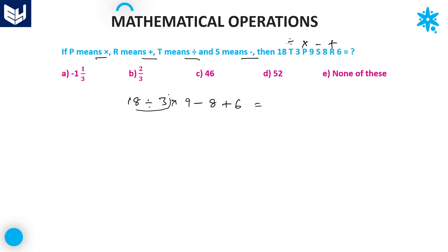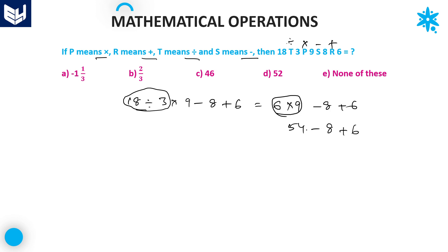Solving: 18 divided by 3 equals 6. Then multiplication: 6 into 9 equals 54. Now 54 minus 8 plus 6 — that is 54 plus 6 equals 60, and 60 minus 8 equals 52. Therefore, the required answer is 52. Option D is the right answer.